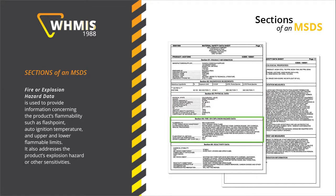The Fire or Explosion Hazard Data section is used to provide information concerning the product's flammability such as flash point, auto-ignition temperature, and upper and lower flammable limits. It also addresses the product's explosion hazard or other sensitivities.